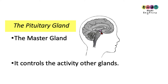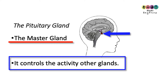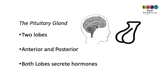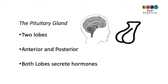The pituitary gland is located in the base of the skull. It's known as the master gland because it controls the activity of many other glands — a bit like the conductor in an orchestra. It is located here in the base of the skull and is composed of two lobes: the anterior and the posterior lobes — front and back — and both of these secrete particular hormones.